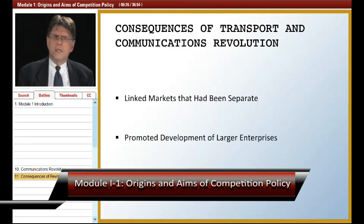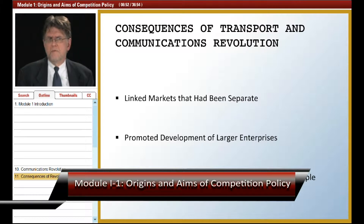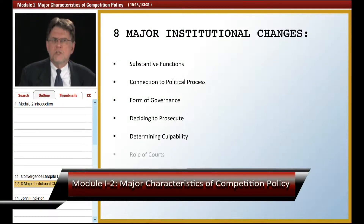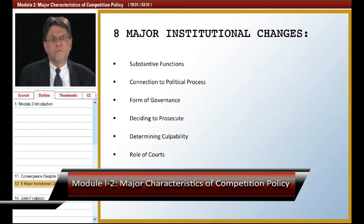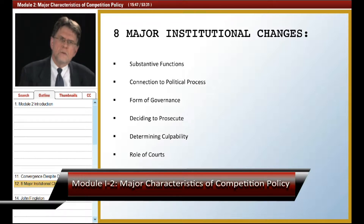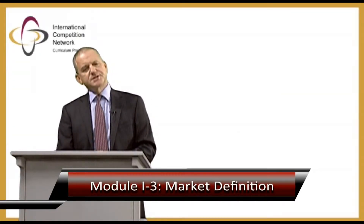Those developments linked together what had previously been separate and insular geographic markets, and permitted the development of much larger business enterprises than had ever been seen before. The discussion focuses on eight major institutional choices, including: which substantive functions the competition system should perform; what connection the public competition agency should have to the political process; the appropriate form of governance within the competition agency; and who should decide to prosecute cases. Three other initial modules introduce important conceptual building blocks for competition law enforcement: market definition, market power, and competitive effects.